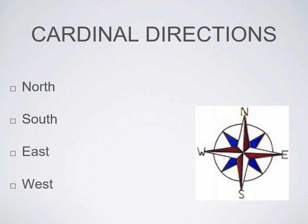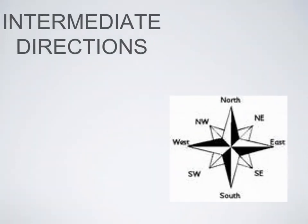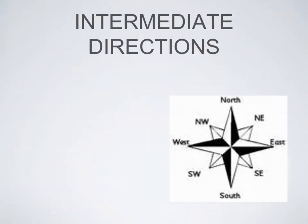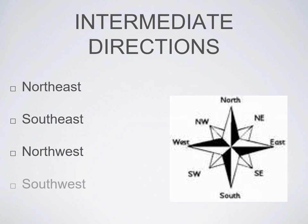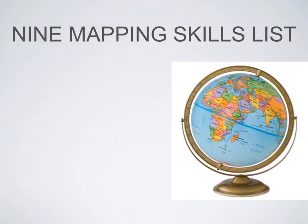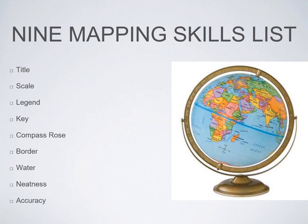That is the basic requirement. To take it further, there are the intermediate directions, which are northeast, southeast, northwest, and southwest, to create that eight-point compass which has the compass rose. To summarize, the mapping skills are: title, scale, legend, key, compass rose, border, water, neatness, and accuracy.